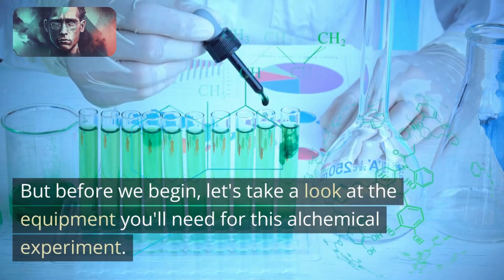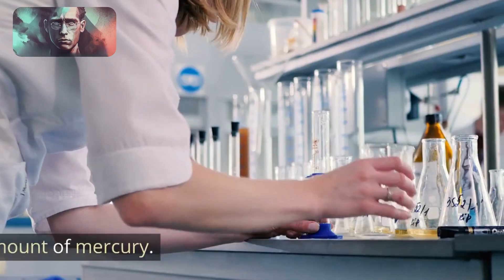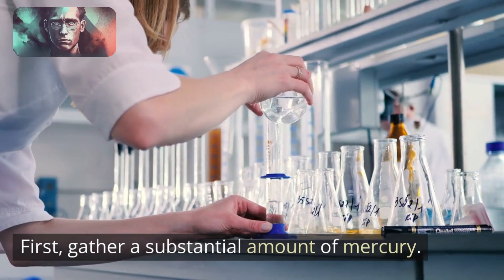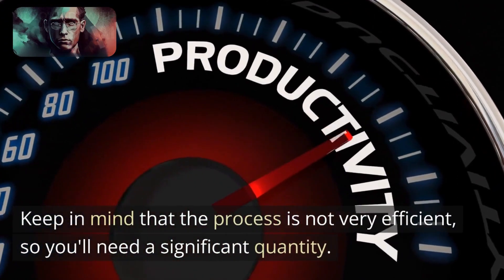But before we begin, let's take a look at the equipment you'll need for this alchemical experiment. First, gather a substantial amount of mercury. Keep in mind that the process is not very efficient, so you'll need a significant quantity.